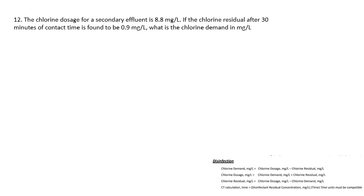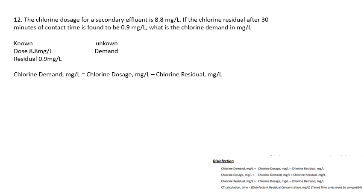Question number twelve: the chlorine dosage for a secondary effluent is 8.8 mg/L. If the chlorine residual after 30 minutes of contact time is found to be 0.9 mg/L, what is the chlorine demand? You know your dose is 8.8 mg/L and after 30 minutes the leftover residual is 0.9 mg/L. Using the demand formula — chlorine dosage minus chlorine residual — 8.8 minus 0.9 gives a chlorine demand of 7.9 mg/L.